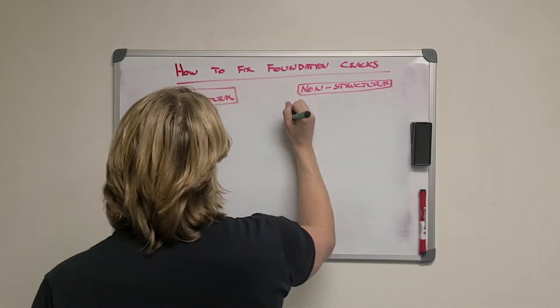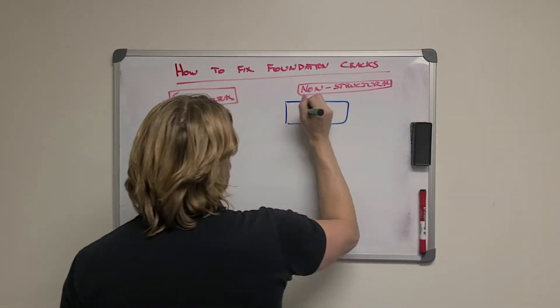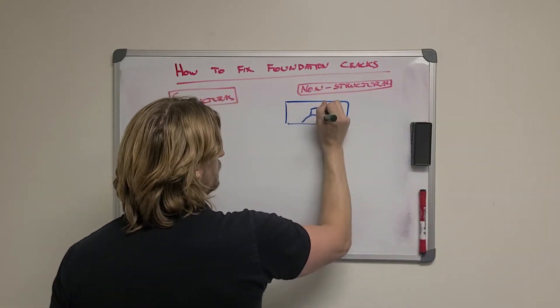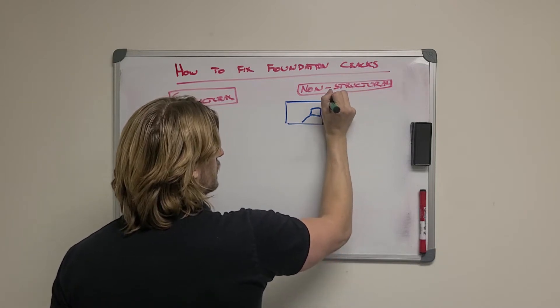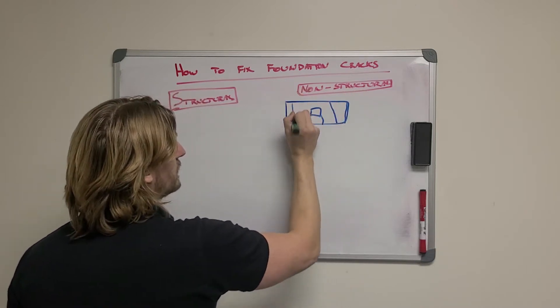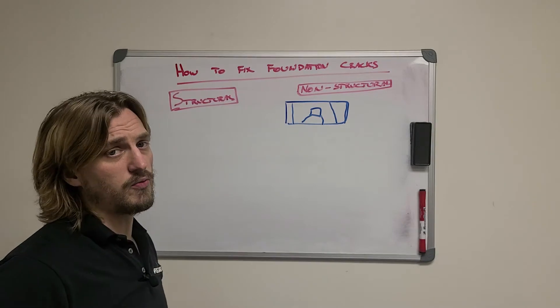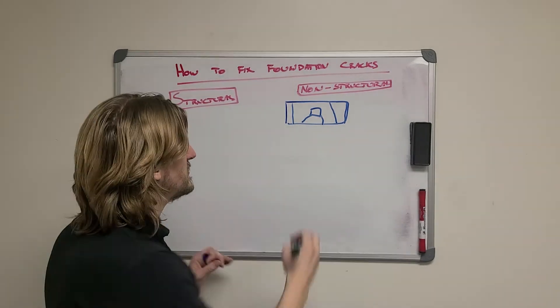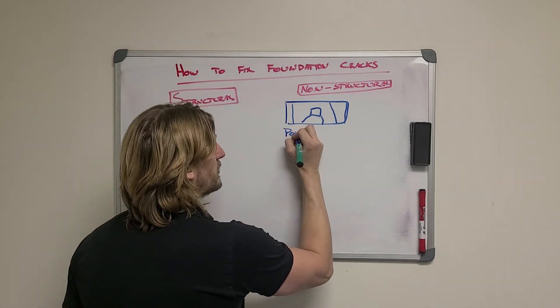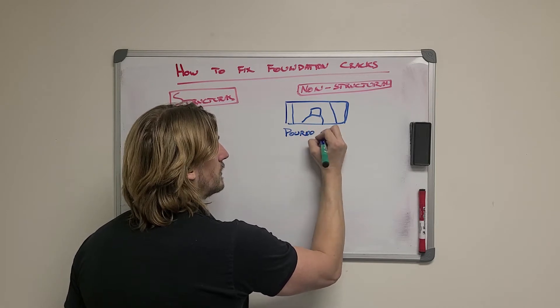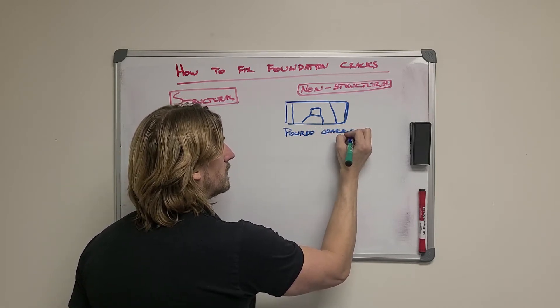These would be those waterproofing cracks that you see in your foundation that either go off of windows, come down the corner, or just run down vertically or slightly diagonally onto the foundation wall itself. This is all for poured concrete foundations.